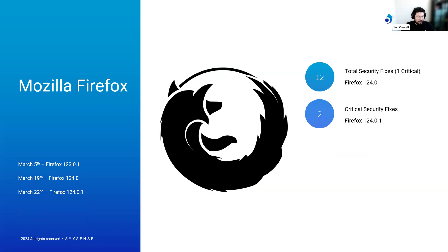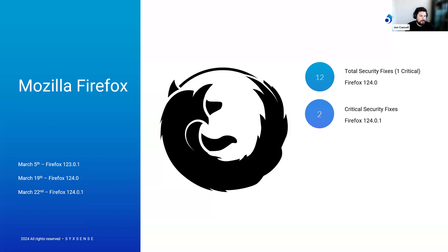Firefox has had three releases since last month's webcast. On March 5th, Firefox went to version 123.0.1 with minor fixes, nothing to highlight. March 19th brought Firefox to version 124 for main and extended release users with 12 security fixes: one critical, five high, five moderate, and one low severity. Security fixes include Windows Error Reporter being used as a sandbox escape vector, mishandling of register values, integer overflow, improper handling of HTML body tags, and the typical high-severity monthly memory safety bugs. CVE-2024-2615 had a critical severity — the first time in about a year I've seen that.